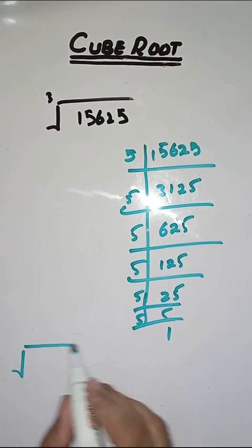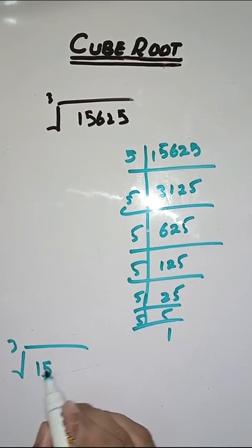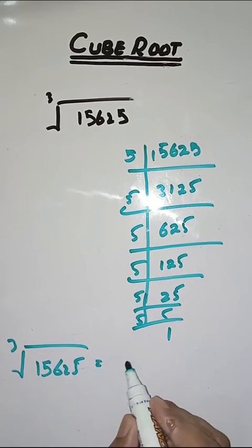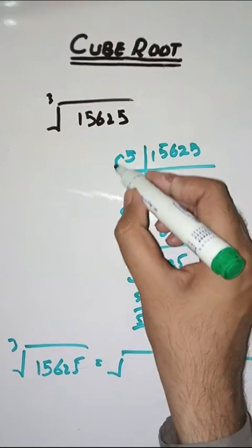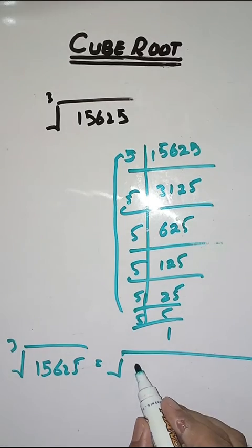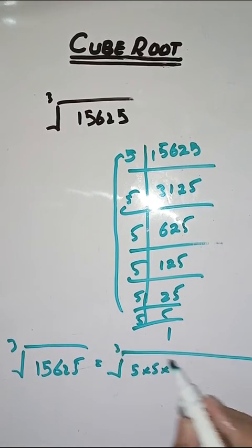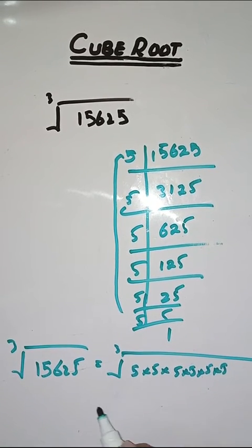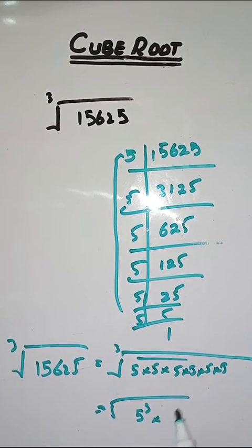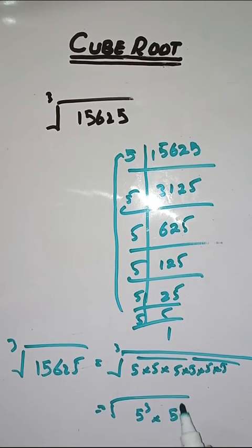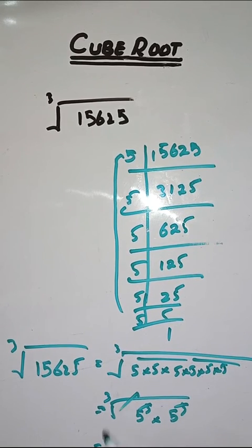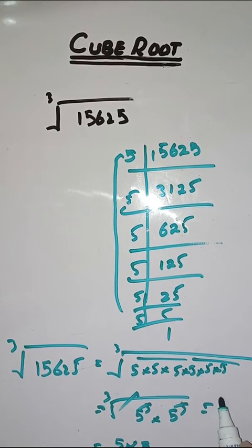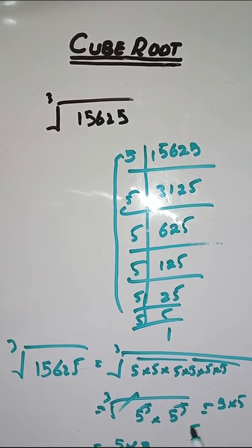So the cube root of 15,625 is equal to the cube root of its prime factors: 5 × 5 × 5 × 5 × 5 × 5 × 5, which is equal to 5 cubed into 5 cubed. So this cube and cube root cancel out, and we are left with 5 × 5, which is equal to 25.